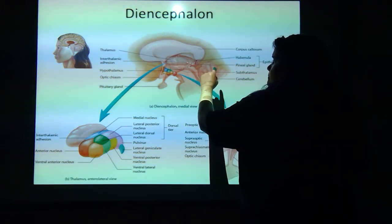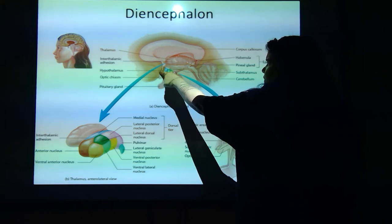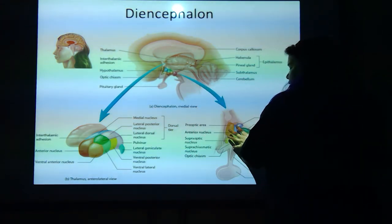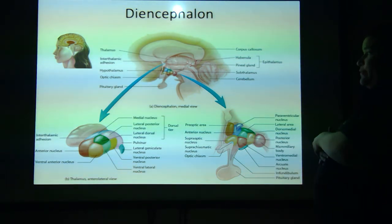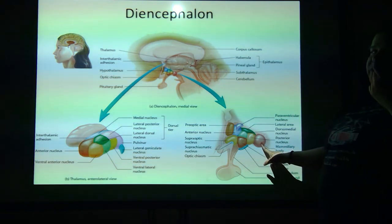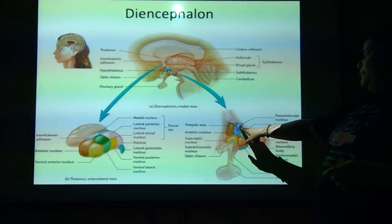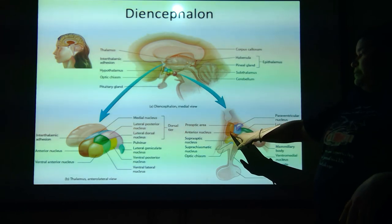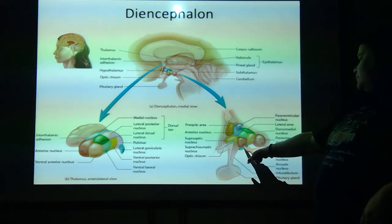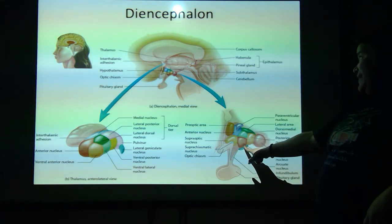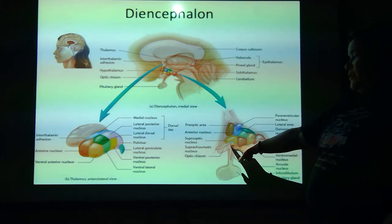When you go past that to where it looks like there are skittles, that is actually the hypothalamus, which is blown up right here. Each one of those skittles represents a different piece or part. Remember the mammillary body — it's right there. You've got the posterior nucleus, the lateral area, the paraventricular nucleus, the preoptic area, the anterior nucleus, the supraoptic nucleus, the ventromedial nucleus, the arcuate nucleus, and the suprachiasmatic nucleus.